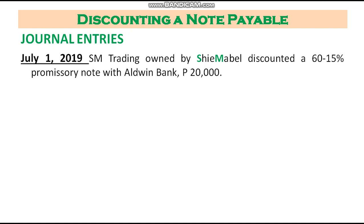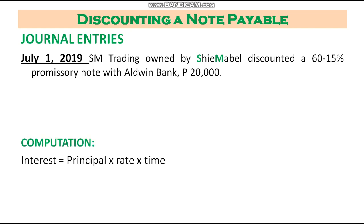Now we go to the journal entries on July 1, 2019. SM Trading, owned by Shima Bell, discounted a 60-day, 15% promissory note with Alduin Bank in the amount of 20,000 pesos. The first thing you will do is compute the interest — since the note is discounted, the interest is deducted upfront. The formula for interest is: Principal × Rate × Time.